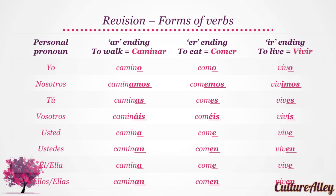Let's look at the examples for forms of verbs again. Let's look at the forms of caminar first. To walk or caminar ends in AR. And its forms are — next, we look at the forms of to eat or comer, which ends in ER.